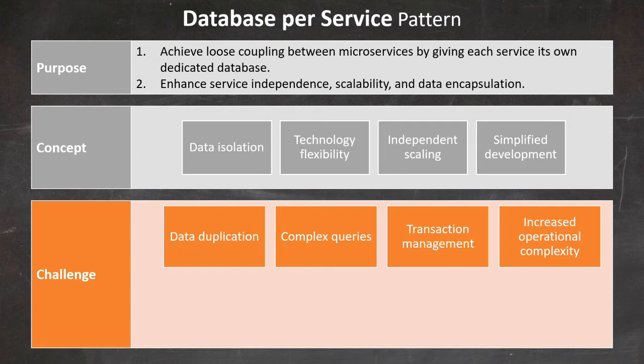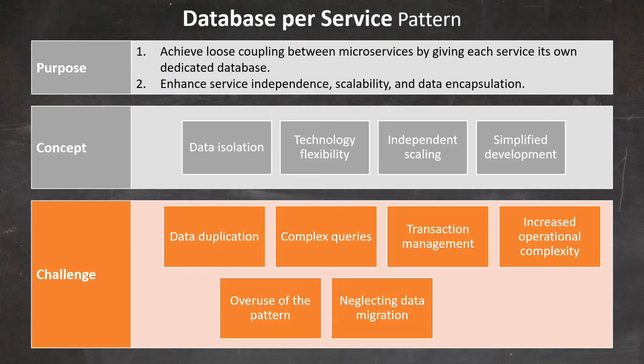We also need to be aware of common mistakes to avoid. For instance, overusing the pattern — applying this pattern unnecessarily to small services or tightly coupled domains can lead to increased complexity without significant benefits. Next is neglecting data migration — failing to plan for data migration when splitting a monolithic database into separate service databases can create issues. Lastly, ignoring eventual consistency — not designing systems to handle eventual consistency between services can result in data inconsistencies.